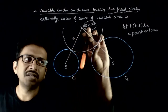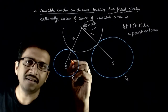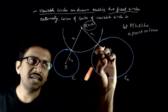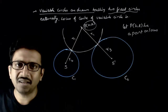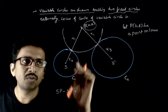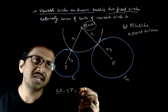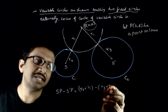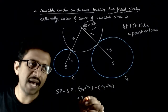If this radius is r1, this will also be equal to r1. Let the given radii be r2 and r3. Now, what is SP minus S'P — that is, the difference between this distance and this distance? SP is r2 plus r1, and S'P is r3 plus r1. So r1 and r1 cancel, giving r2 minus r3.